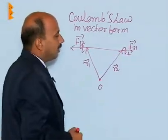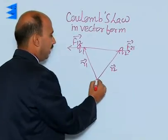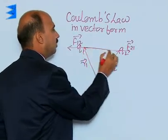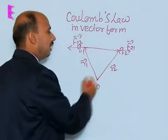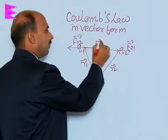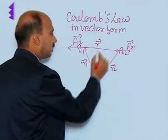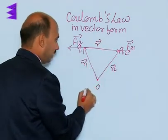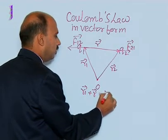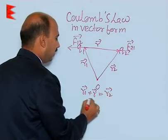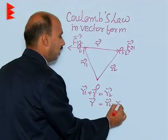Now, we can write here, if you want to get F21, this is the vector to this side. Suppose this is vector R here, so according to the triangle law of vector addition, R1 plus R is equal to R2, so we can write vector R is equal to R2 minus R1.